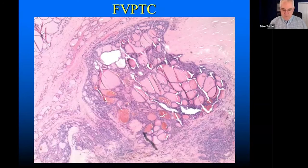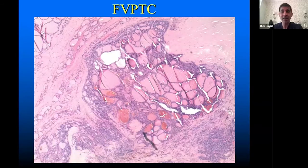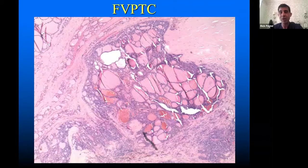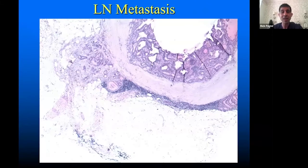We went ahead with the lobectomy, and we've got a follicular variant of papillary thyroid cancer. This looks fairly clear-cut based on one slide — I know it's not the entire specimen — but we had a surprise.